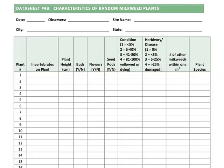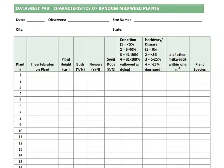Once you're done measuring monarch density, measure the characteristics of random milkweed plants on datasheet 4B.